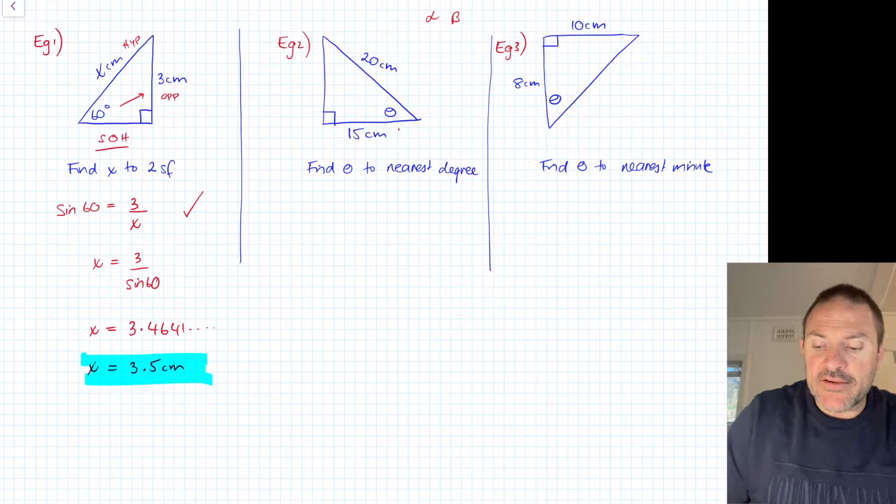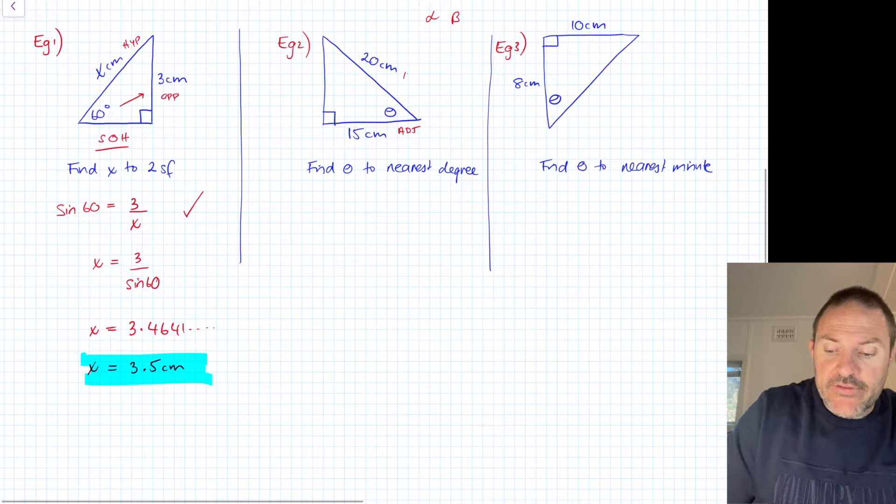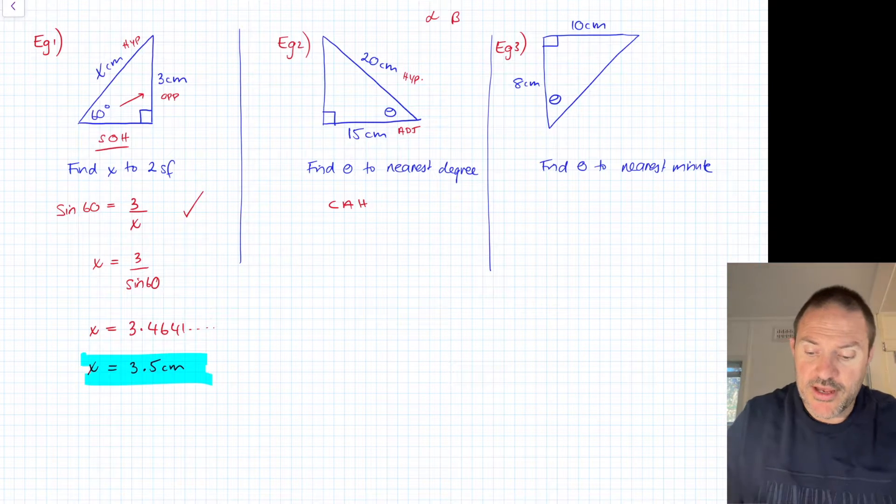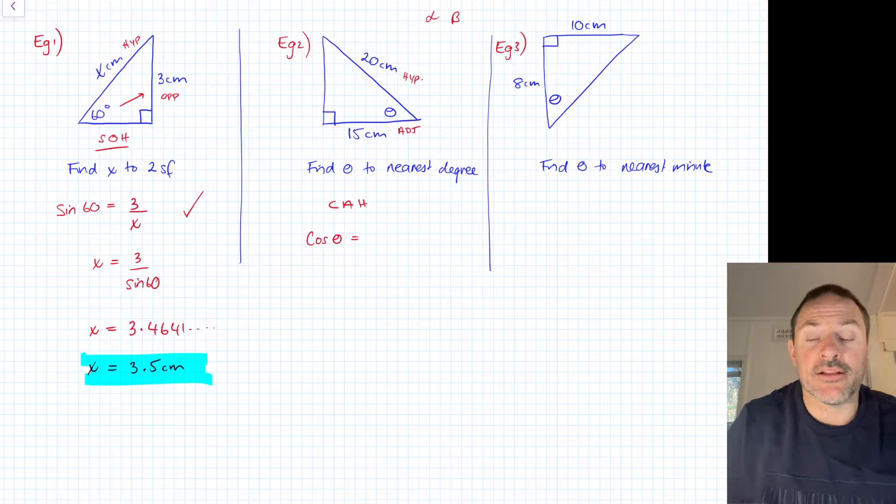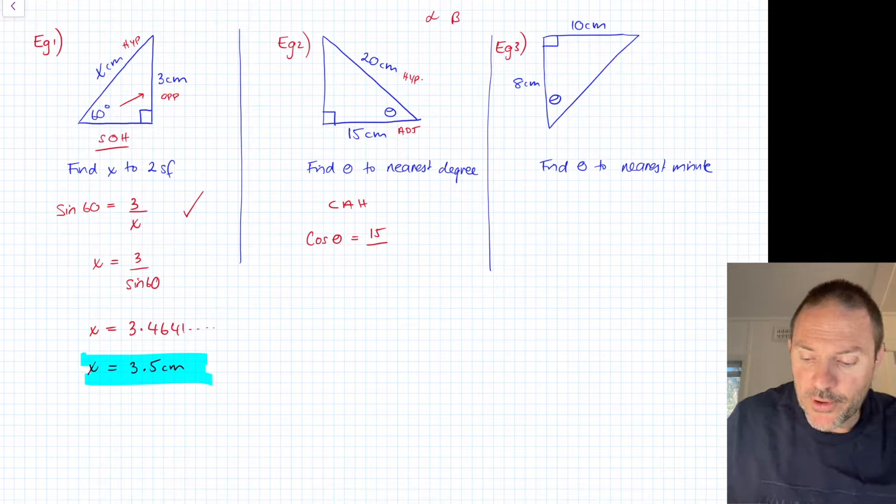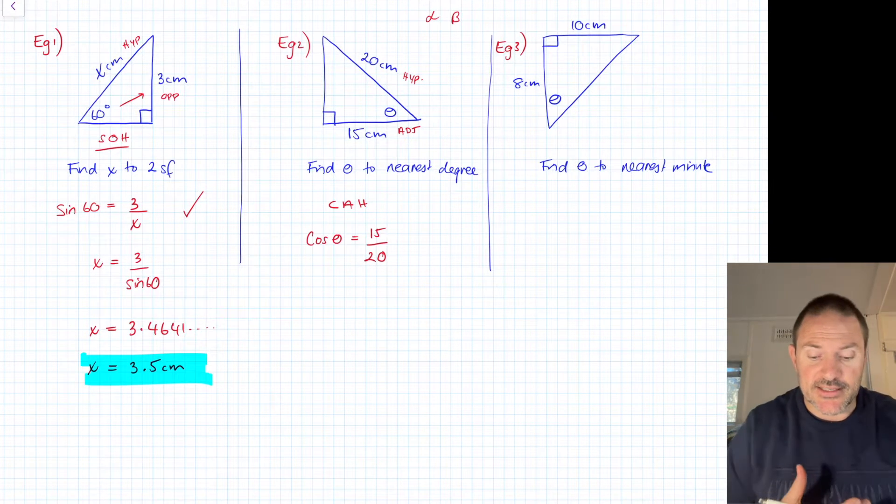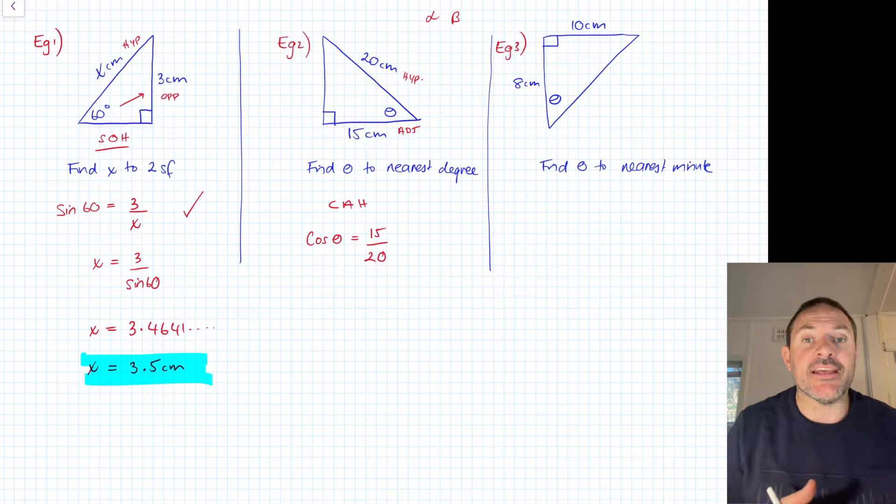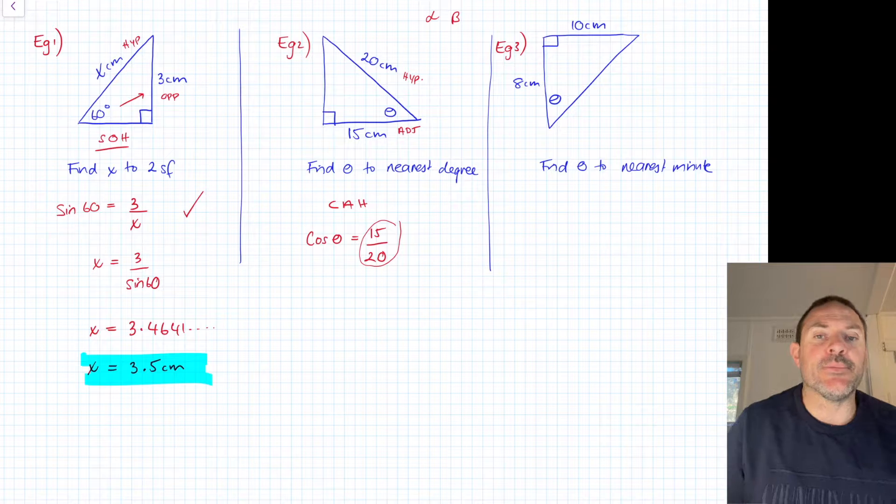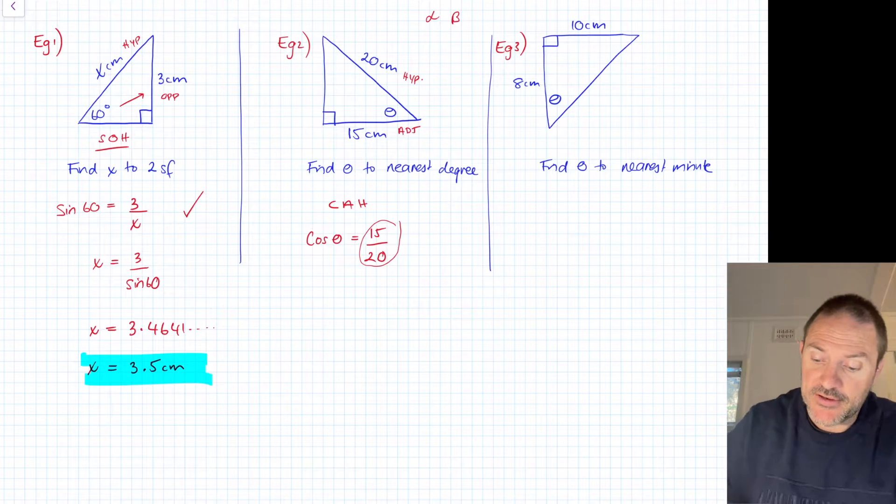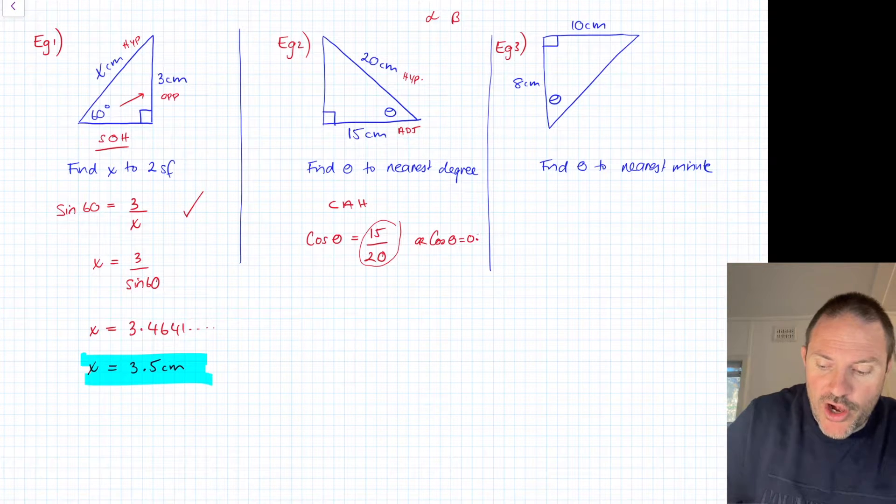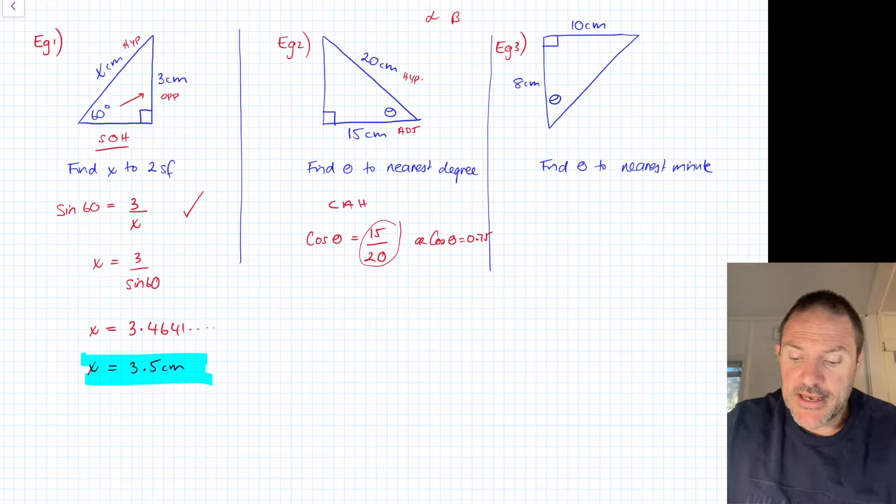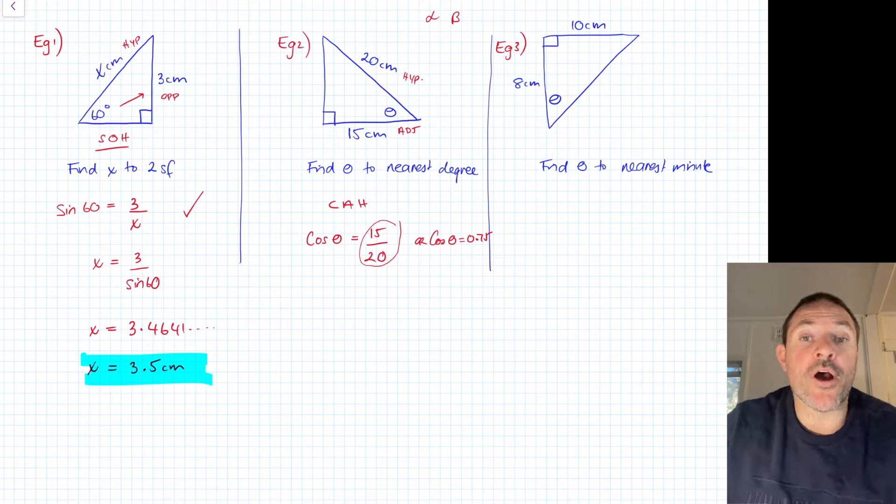In regards to the theta, we have been given the adjacent side which is the 15, and we've been given the hypotenuse side which is 20, which means that we are using CAH cosine. Nothing is different from yesterday's work. So I'm going to write down cos theta. I don't know what my angle is. The adjacent is 15 and my hypotenuse is 20.